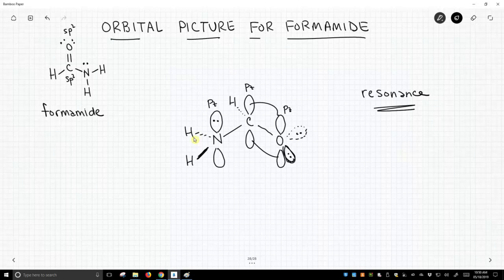So this is the orbital picture for formamide. It has a pi bond drawn just the way we drew all of our other pi bonds, but it also has this kind of weird nitrogen in which the lone pair sits in a p orbital.